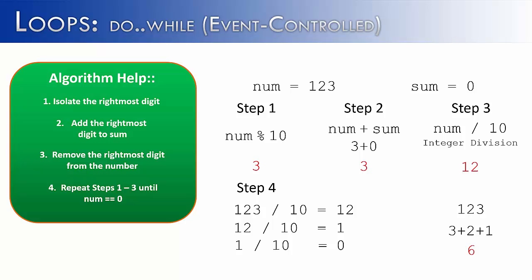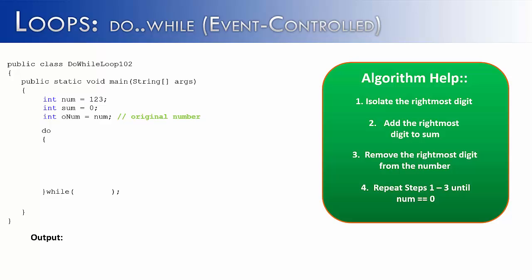And let's see how this would work with a do while loop in the code. So what I've done is I've created three variables. The num, which is 123. The sum, which is our goal to sum up the individual digits. And I've created a third variable called onum, which is going to stand for original number. We'll see why we need that a little bit later in the program. So I've created my do while loop and I have my algorithm help on the right. The first thing that I want to do is isolate the rightmost digit. I do that by taking num and modestly dividing it by 10.